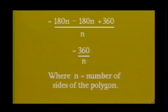Thus, each exterior angle of a regular polygon equals 360 divided by n degrees, where n is the number of sides of the polygon.